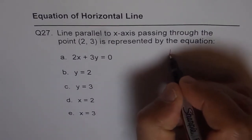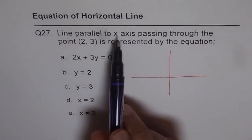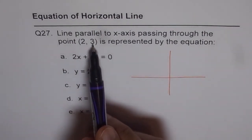So let's think about it first. Let's say this is our coordinate plane and we need to find equation of a line which is parallel to x-axis, that means it is a horizontal line and it is going through the point (2, 3).